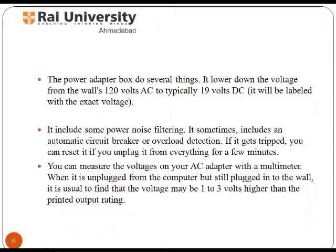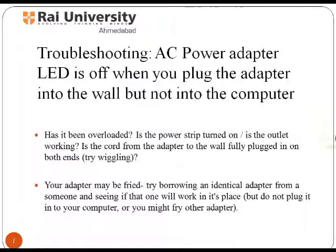The AC adapter lowers down the voltage from 120 volts AC to 19 volts DC and includes an automatic circuit breaker to protect from external power noise. With the help of a multimeter you can measure voltage, current, and resistance. Sometimes you might observe that the LED is off when you plug in the adapter, which shows whether there is an overload or the plug is loose on either side.